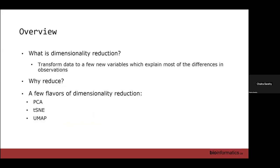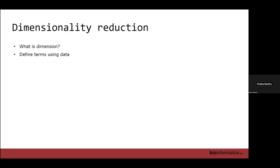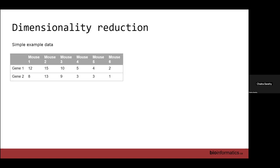So what is dimensionality reduction? It is the method for transforming your data which has a lot of variables — like we saw in the morning — to a few variables which explain the most differences in your observations. We're going to break down every part of that definition. To understand it, we'll look at an example dataset and define terms: what a dimension is, what a variable is, what samples are, and why we need to reduce.